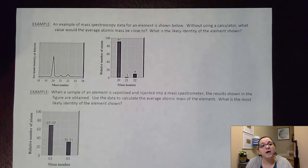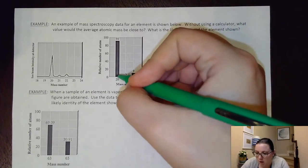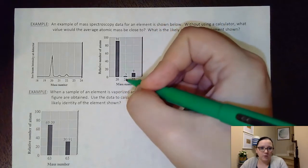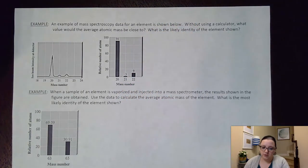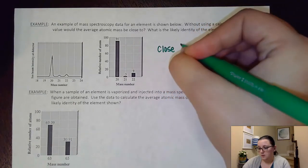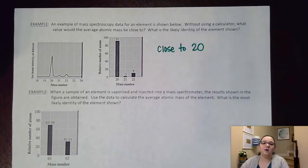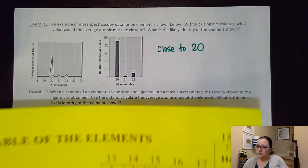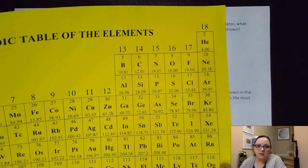It says, without using a calculator, what value would the average atomic mass be close to? Well, I could see here that I've got a lot at a mass number of 20, and only a little bit at 21 and 22. So if I had to make a guess, I would say this is really close to 20 for my mass number. And if I go look at my periodic table, and I go find an element that's really close to 20, I'm like, well,